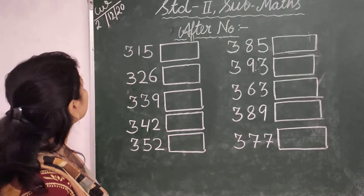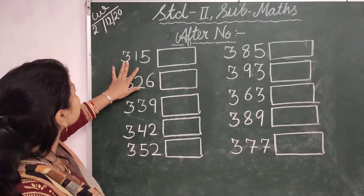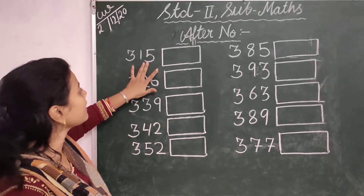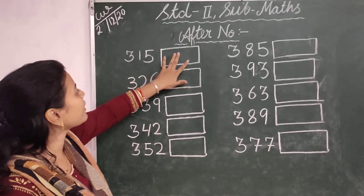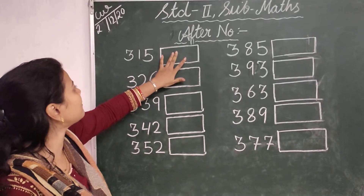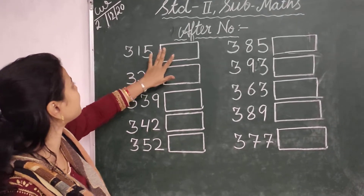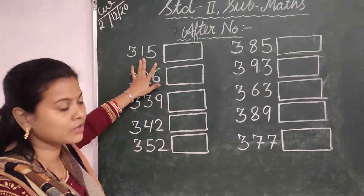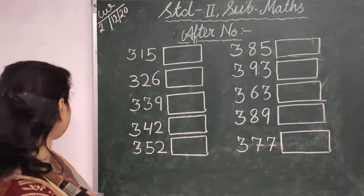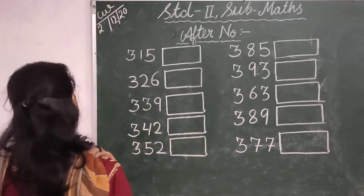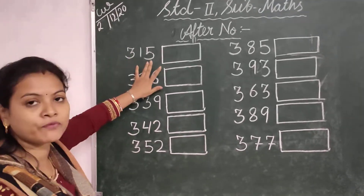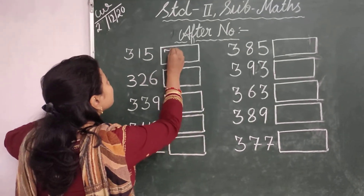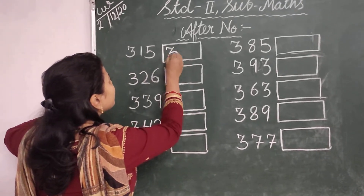Here the number is 350. We have to write the number that comes after 350. The number that comes after 350 is 351.